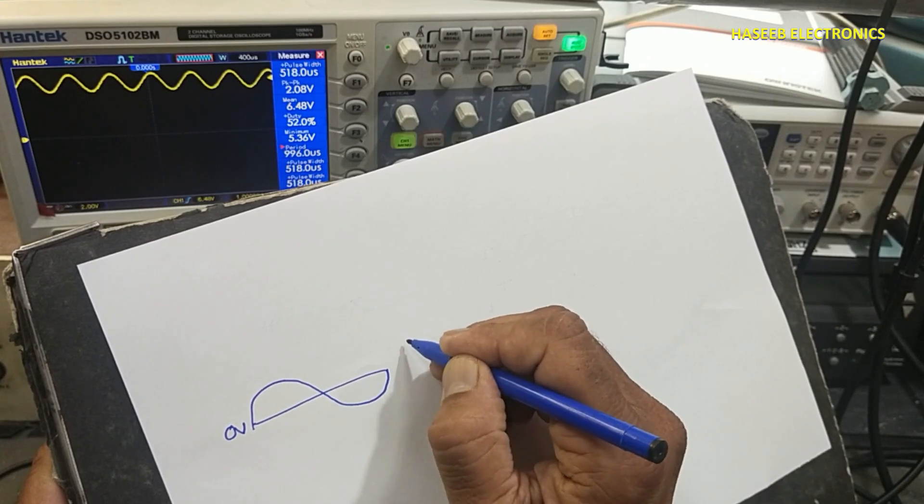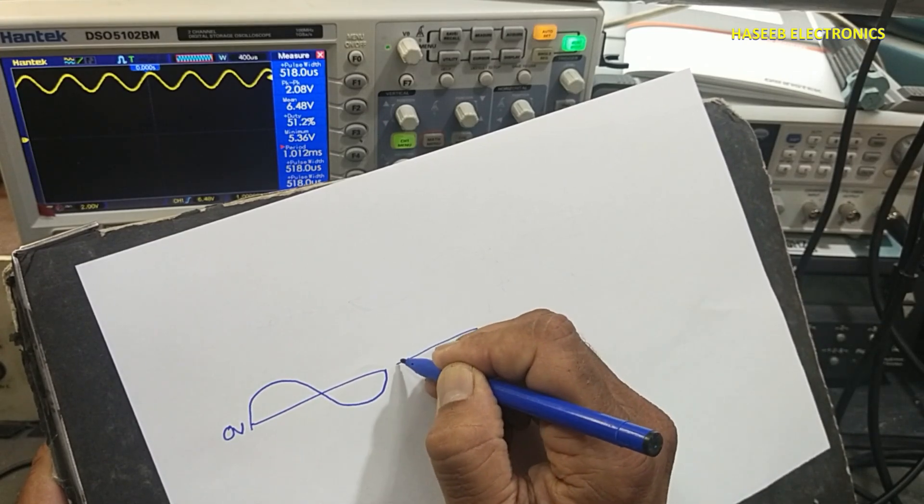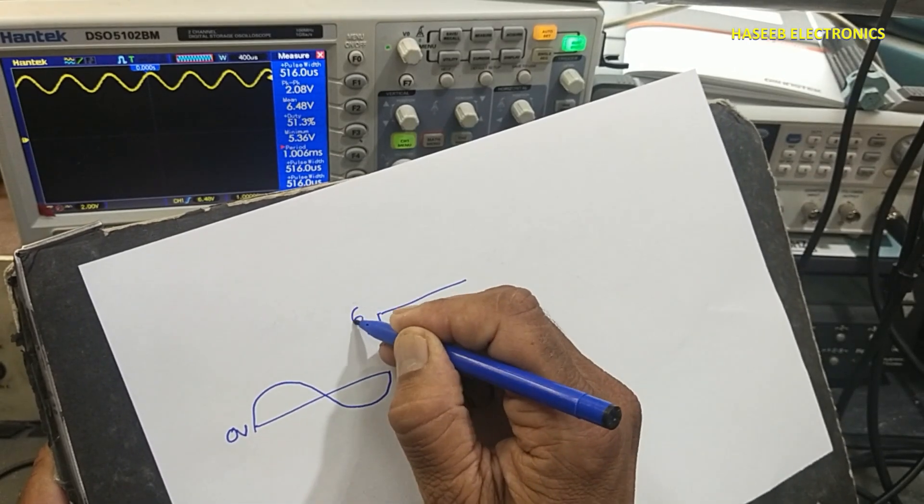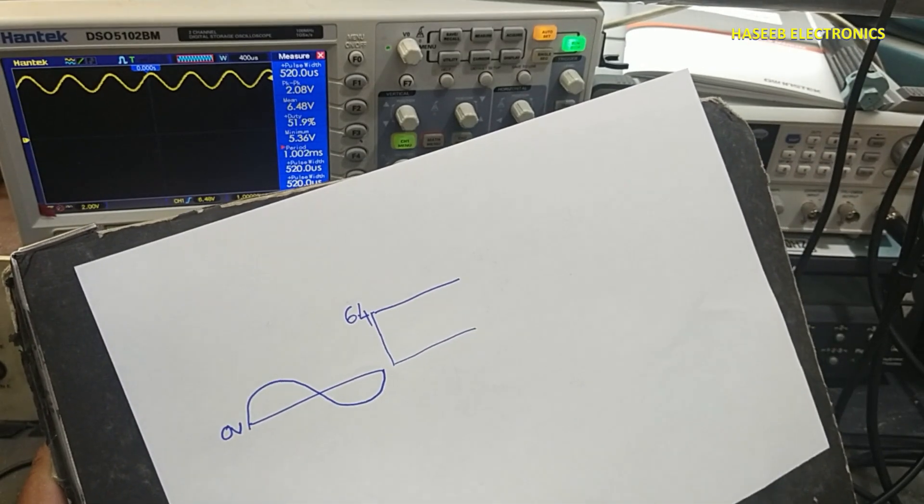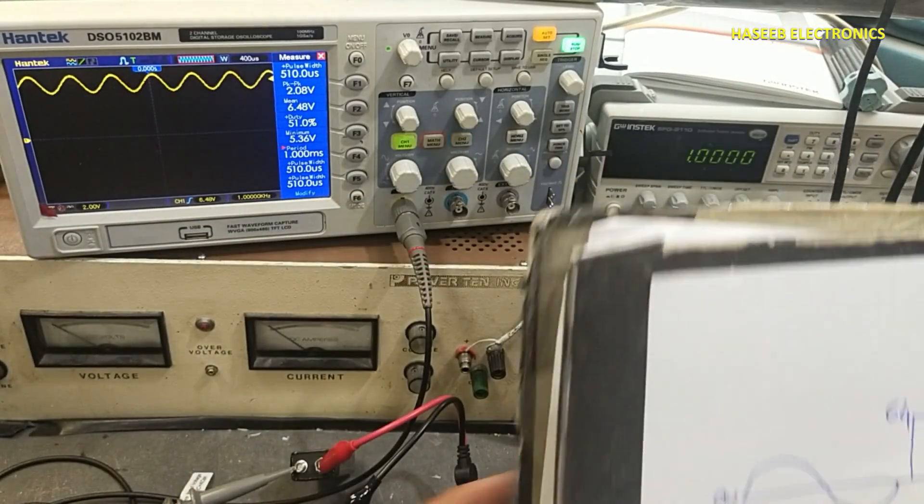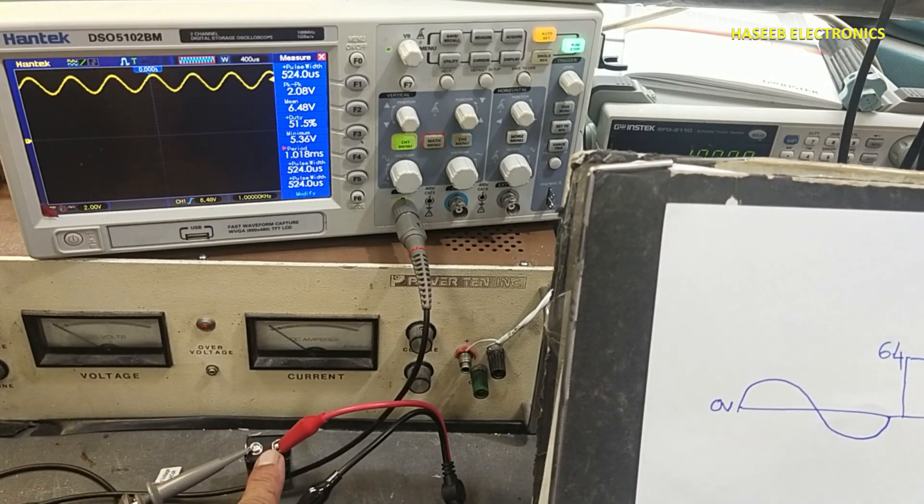And we have DC signal from zero to positive side, 6.4 volts. This is same zero line when we connected signal at negative terminal.